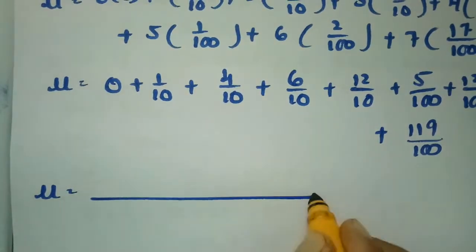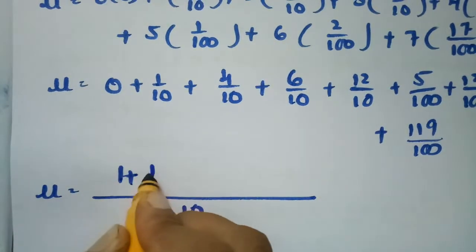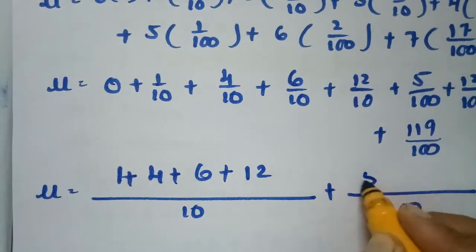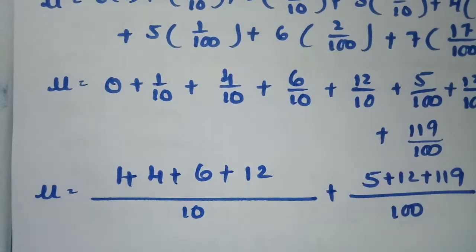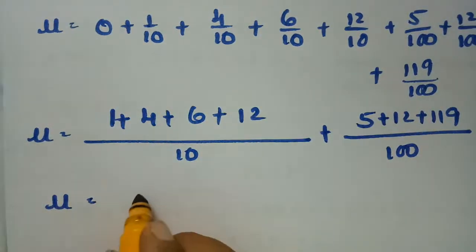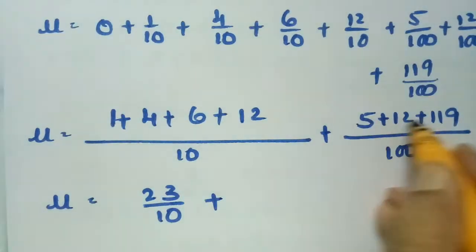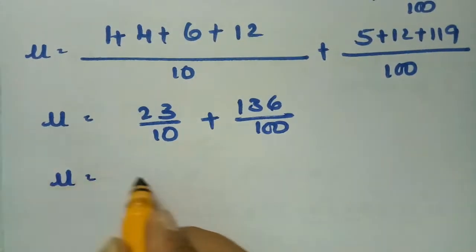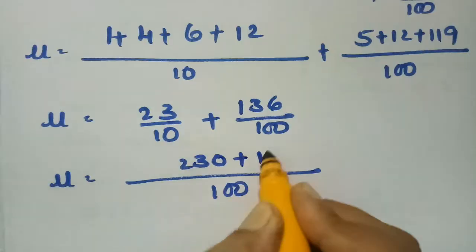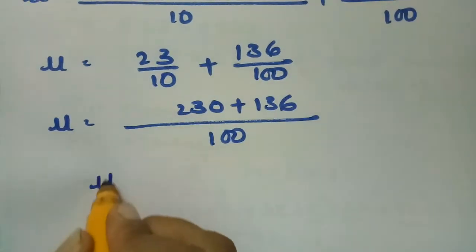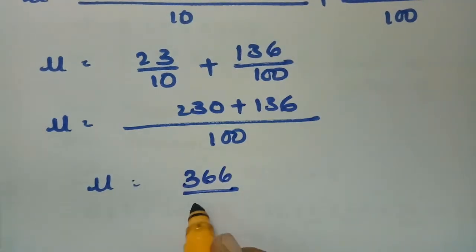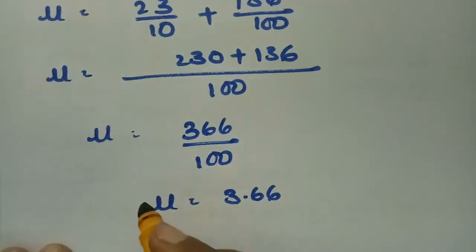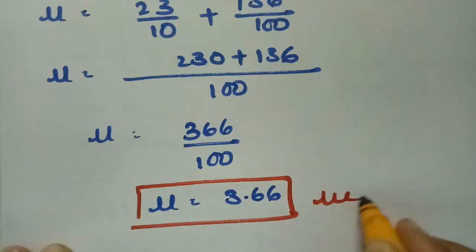Taking 10 as LCM for the first group gives 1 + 4 + 6 + 12 = 23/10. Taking 100 as LCM for the second group gives 5 + 12 + 119 = 136/100. Then μ = 230/100 + 136/100 = 336/100 = 3.66. So the mean μ = 3.36.